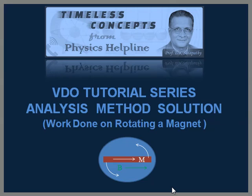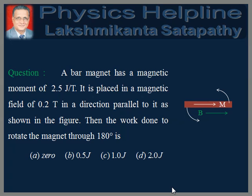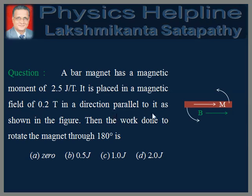The question is as follows. Read the question carefully. The situation is shown in the figure. This is the given bar magnet having magnetic moment M towards right, whose value is given as 2.5 joules per tesla. It is placed inside a uniform magnetic field B, which is given as 0.2 tesla. The direction of the magnetic moment of the bar magnet is parallel to that of the external field. From this orientation, the magnet is rotated through an angle of 180 degrees. We are required to find the work done in the process.